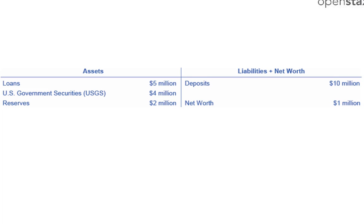A balance sheet can be summed up with this equation: assets equals liabilities plus net worth. A balance sheet is a great tool to allow us to see how banks operate and how they can actually create money.